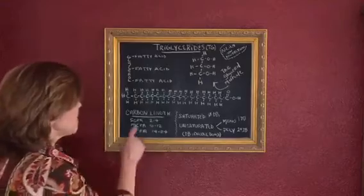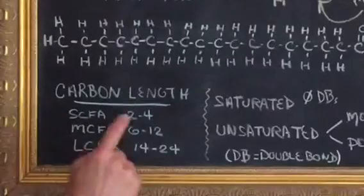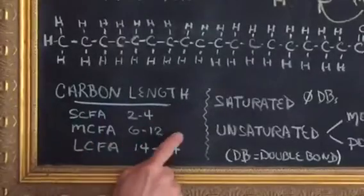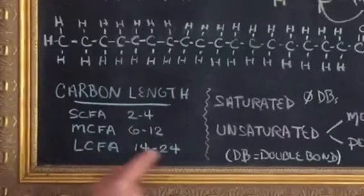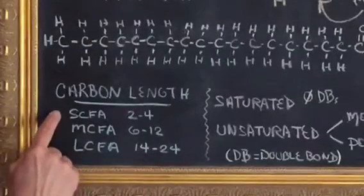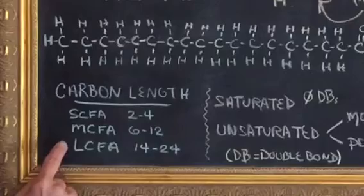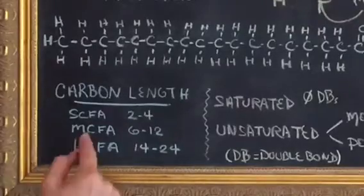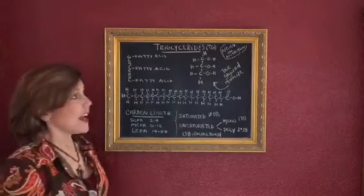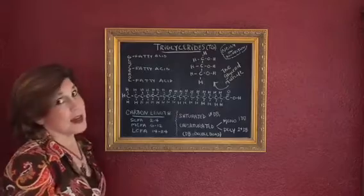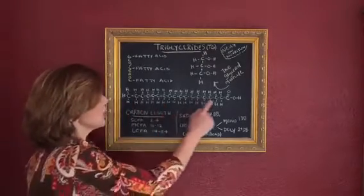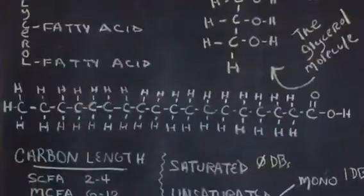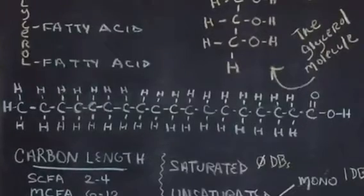So in regard to their length, they can be anywhere from two to four carbons in length, six to 12, or 14 to 24. And those are respectively short chain fatty acids, medium chain, and long chain fatty acids. The most common fatty acids in our diet are the long chain fatty acids. And what I have drawn here is a long chain fatty acid. It's an 18 carbon fatty acid.